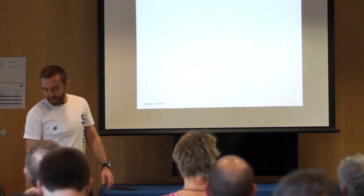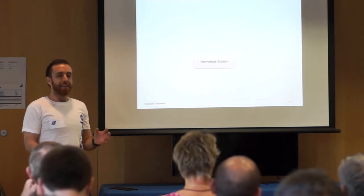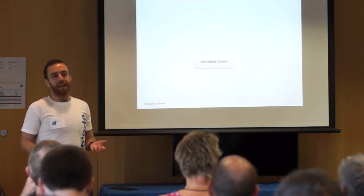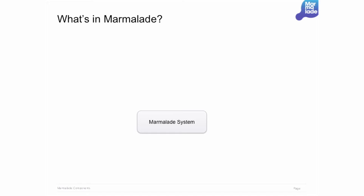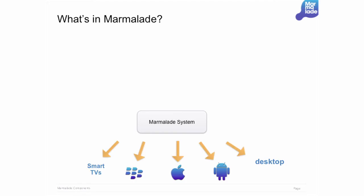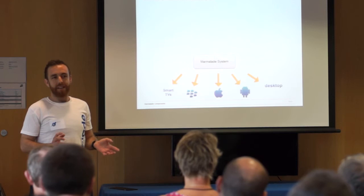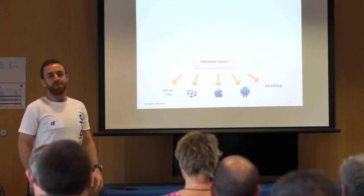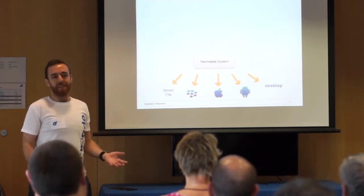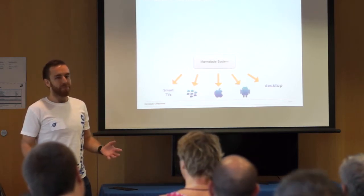So basically what is Marmalade? Marmalade is basically a platform abstraction layer. It lets you write your code once in C++, build a single binary and push that out to lots of devices. Devices we support are basically BlackBerry Playbook and BlackBerry 10, iOS, Android, and desktops — that's Mac and PC with Marmalade 6.1 — and also smart TVs. You'll see later on the day we're doing lots of new stuff in the next six months, so you'll see more platforms coming out.